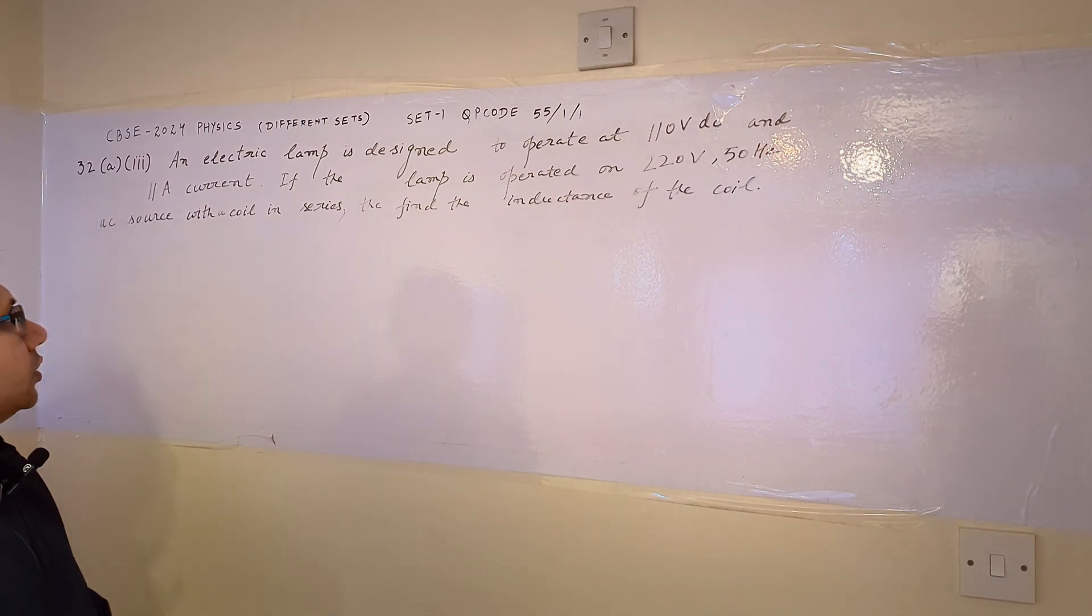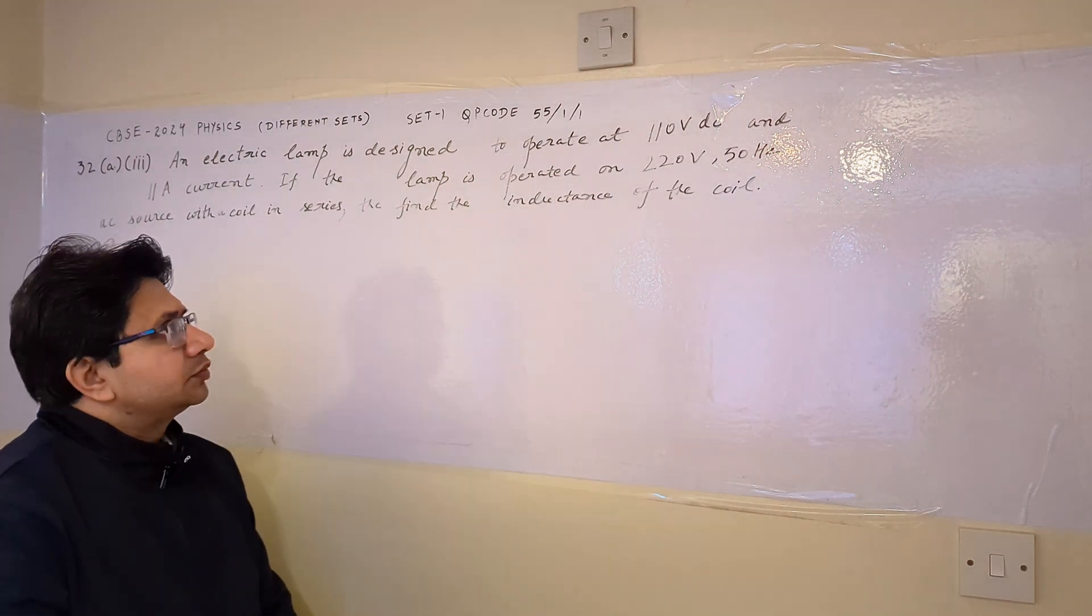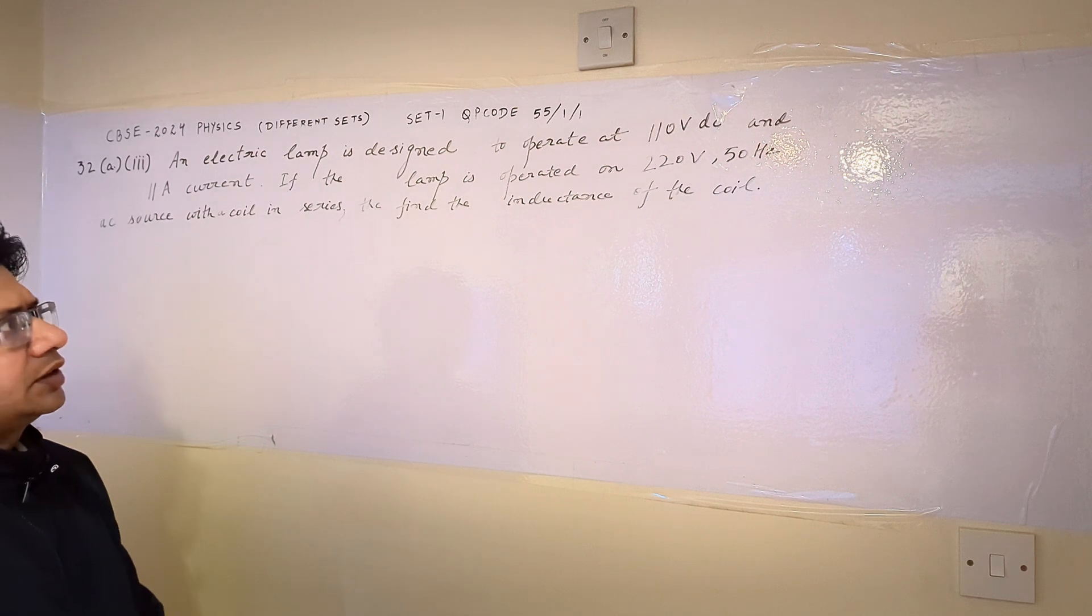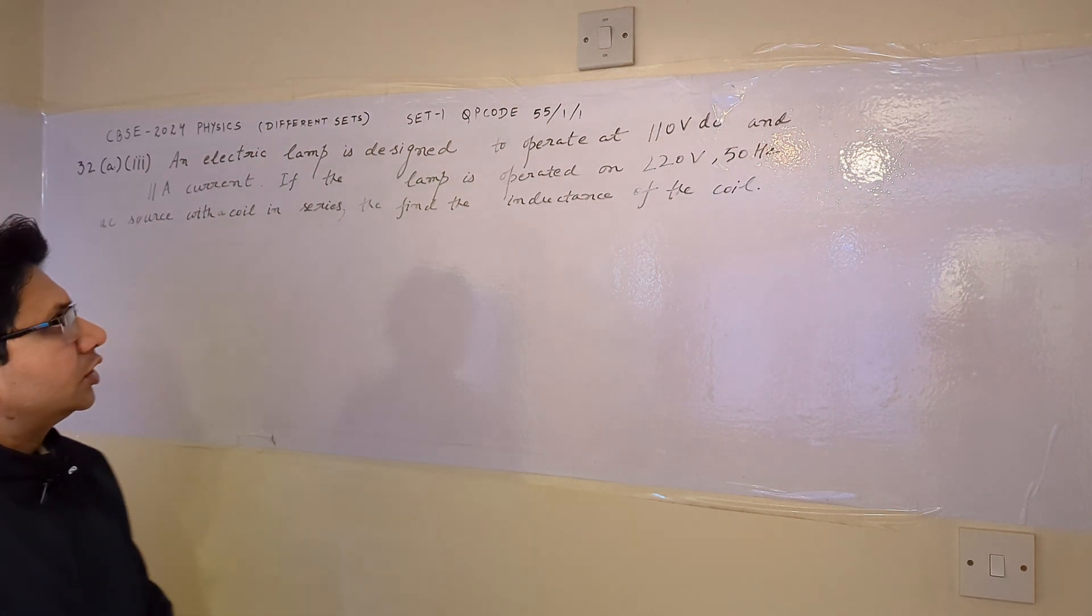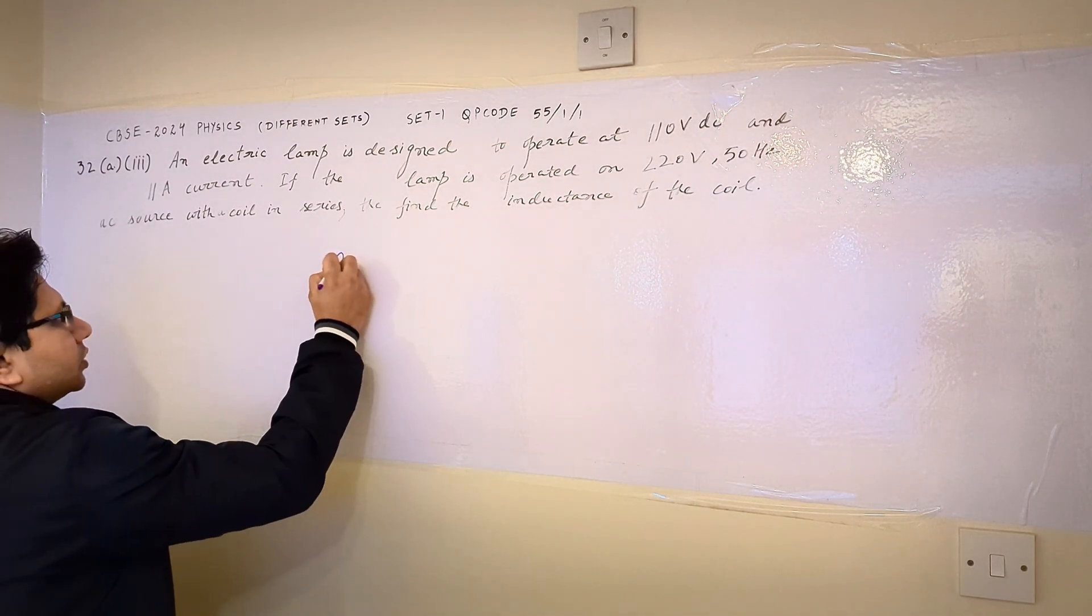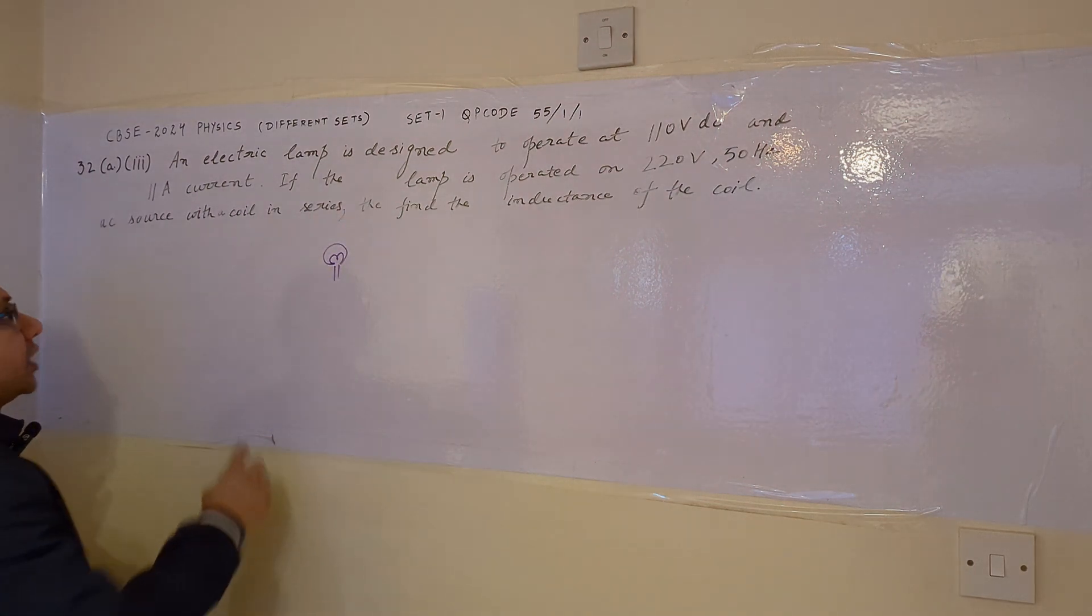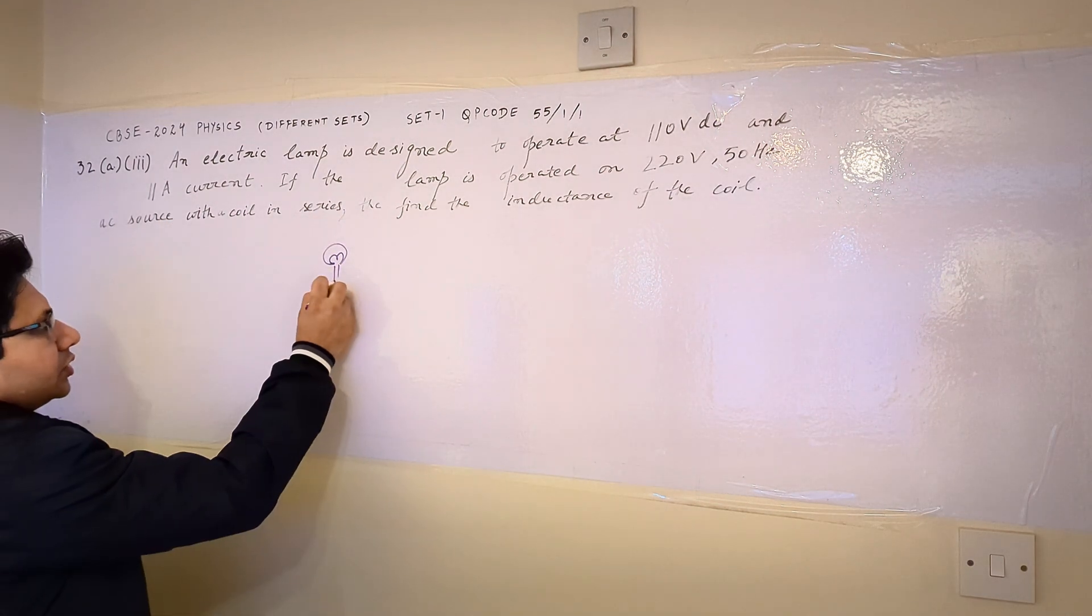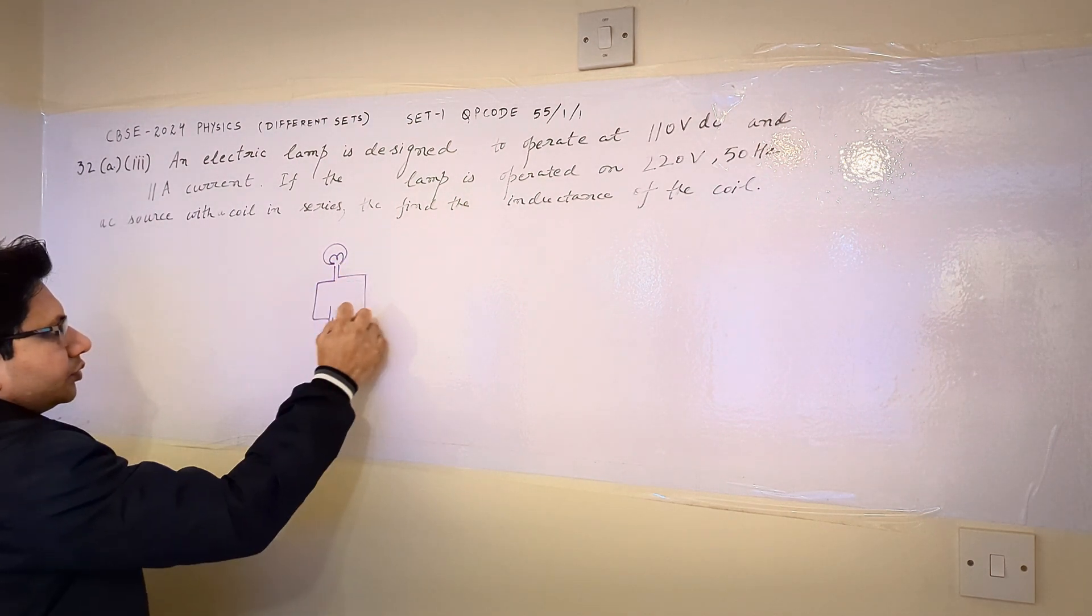So the problem is based on the fundamentals of AC as well as DC, the fundamentals of resistance and reactances. There is an electric lamp in this question, and this lamp is designed to operate on 11 ampere current. In the first case, 110 volt DC signal is applied across it.